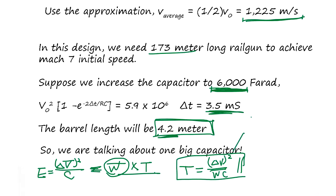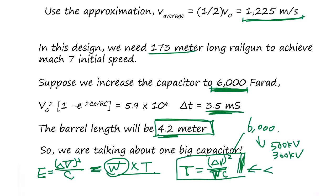With 6000 farads, if the voltage drops from 500 kilovolts down to 300 kilovolts to fire one shot — a drop of 200 kilovolts — dividing by the charging wattage W gives the recharge time in seconds. A reasonable result is somewhere less than 30 seconds between shots.